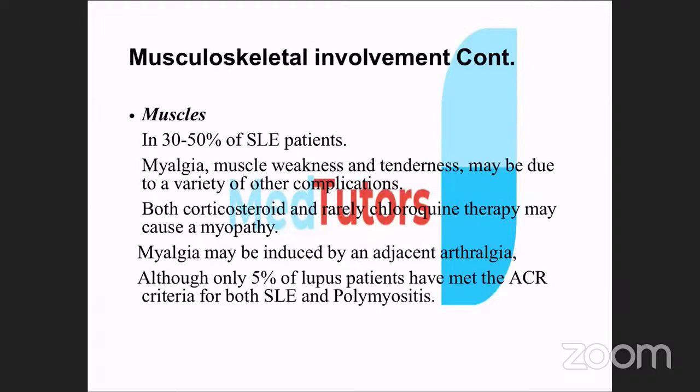Muscles are affected in 30-50% of patients with myalgia and muscle weakness. Early morning muscle pain and stiffness is an important criterion. Treatment with corticosteroids may itself cause myopathy as a side effect, though only 5% of SLE patients meet ACR criteria for both SLE and polymyositis.